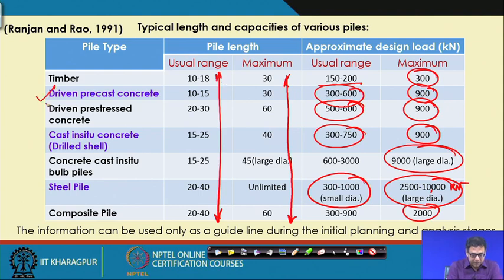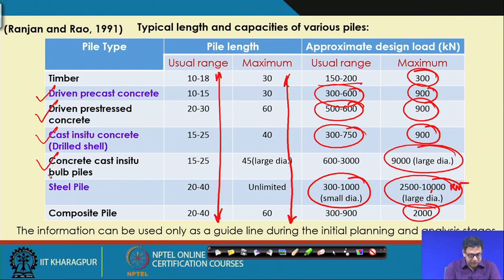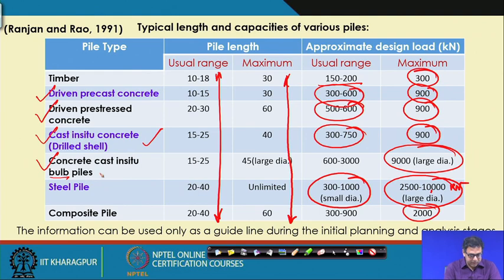Different pile types are summarized: driven precast, driven pre-stressed, cast-in-situ concrete, and cast-in-situ bulb piles. The bulb pile has a larger base diameter compared to the uniform shape, so if the base diameter is more, it will take a higher load. These are the summaries of different kinds of pile.